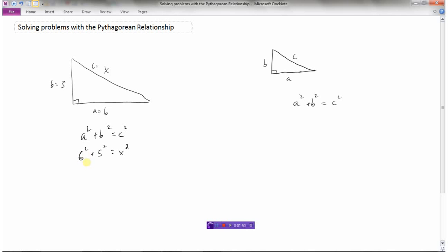So six squared, we know that six squared is six times six, not six times two, six times six, which is 36. Five squared means five times five, which is 25, equals x squared. Now 36 plus 25, if we add that together, that's 61 equals x squared.